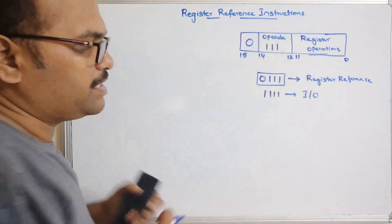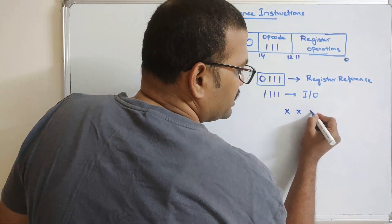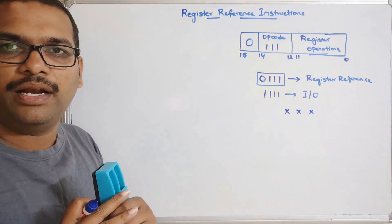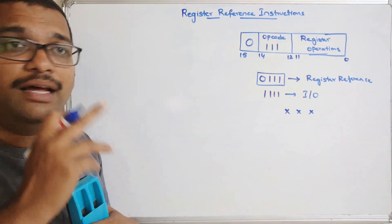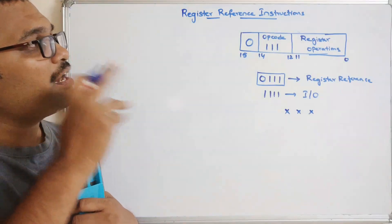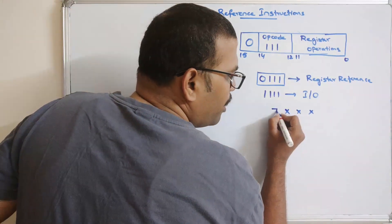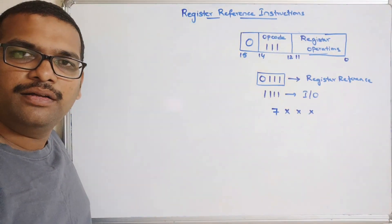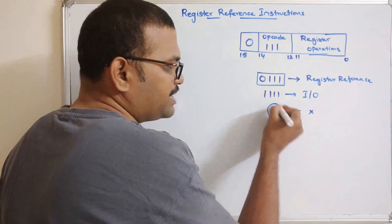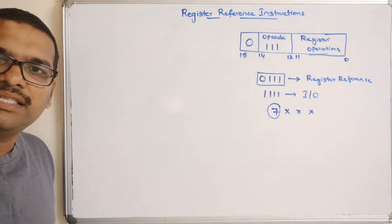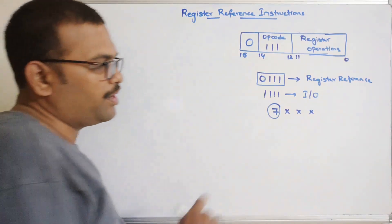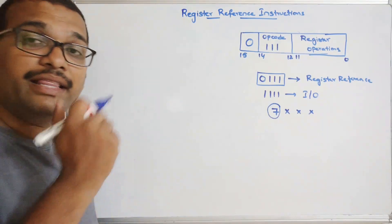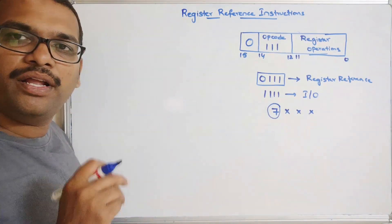There will be only a change in the register operations part — the 12 bits. Each group of 4 bits represents some value. All register reference instructions will be in the form of 7 followed by three hex digits — 7xxx. So if the instruction starts with a 7, that implies it is a register reference instruction. Now we will see the instructions that come under register reference and their corresponding hexadecimal codes.